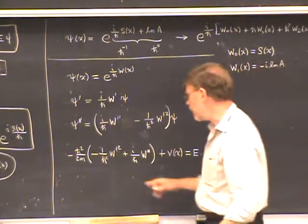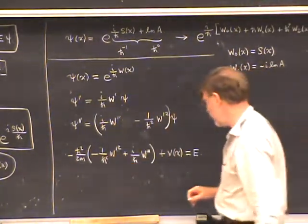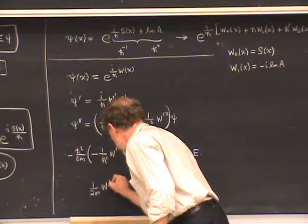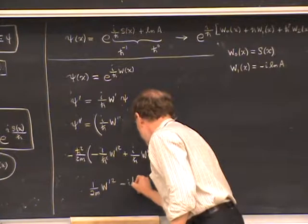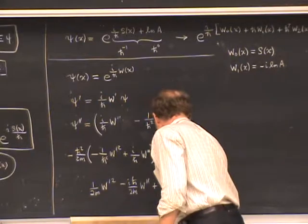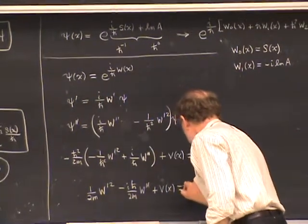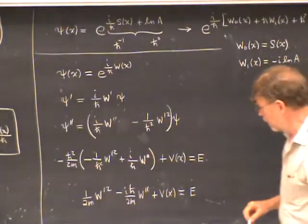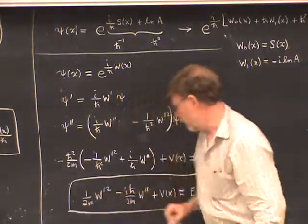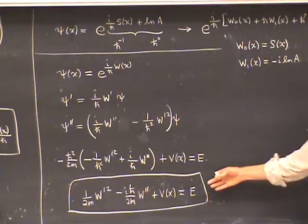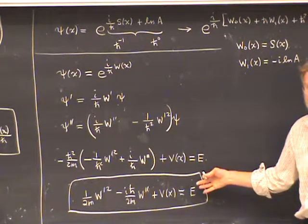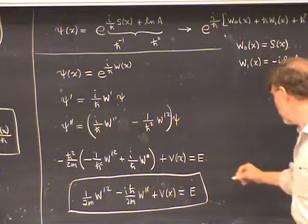Multiplying through by −h-bar²/2m and cleaning up, we get: (1/2m)·(w′)² − (ih-bar/2m)·w″ + V(x) = E. This is the Schrödinger equation transformed from ψ into its logarithm, and there is no approximation at this point — it's exactly equivalent to the original Schrödinger equation.